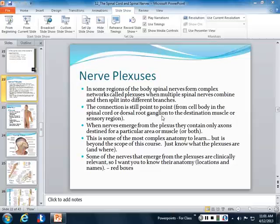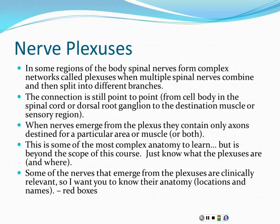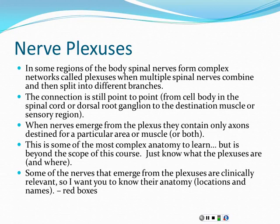One of the key aspects of the spinal cord's anatomy is that it creates the spinal nerves. The dorsal root carries sensory information, the ventral root carries motor information. They combine together and form the spinal nerve, which then splits and becomes the dorsal ramus and the ventral ramus.